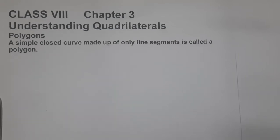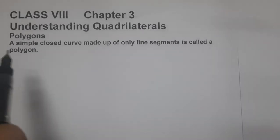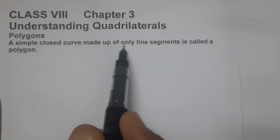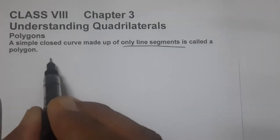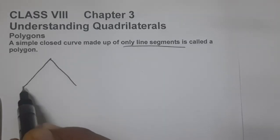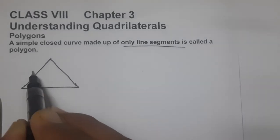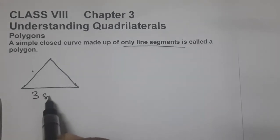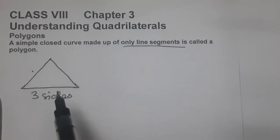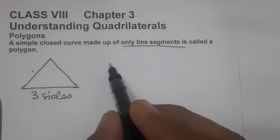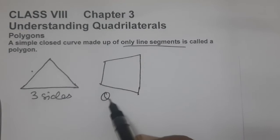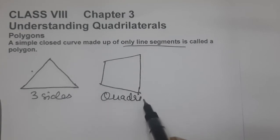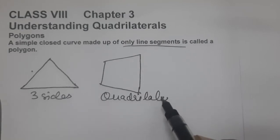Let us start with polygons. What is a polygon? A simple closed curve made up of only line segments is called a polygon. For example, a triangle is a polygon having three sides. Any figure entirely made up of line segments is called a polygon.